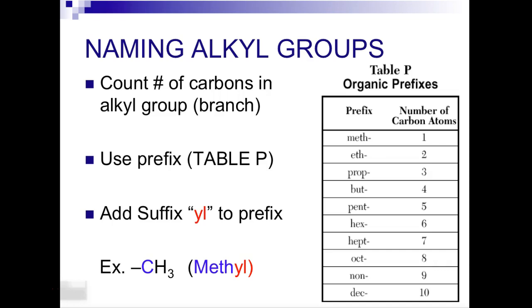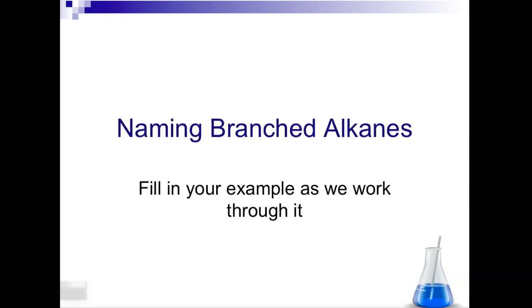So when you name them, you first count all of the carbon atoms in the alkyl branch. Then you're going to use table P, then you're going to add the suffix YL to the prefix. So for example, if you had a CH3 group hanging off, it'll be a methyl group hanging off of your large hydrocarbon chain.